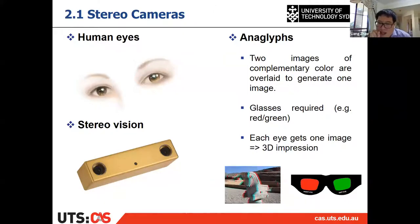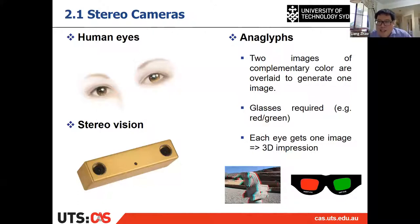You can roughly find that one of the pictures is mainly red and the other is mainly green. When you wear the glasses on the right, there is a red glass and a green glass. It acts as a filter for each of your eyes. For your left eye, there is a red glass, and it filters out the green one, so you only see the red image.